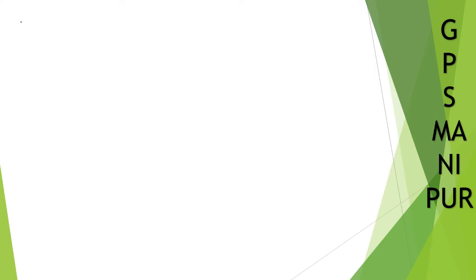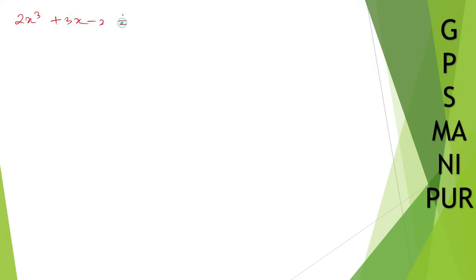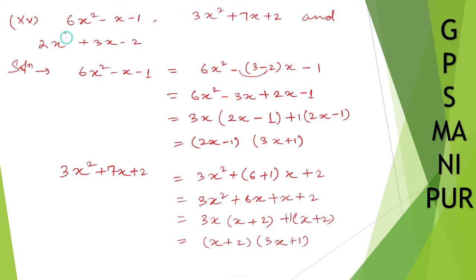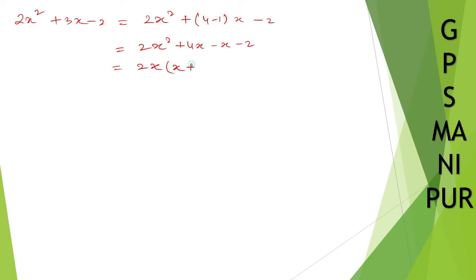For the third one, 2x squared plus 3x minus 2 — note: this is x squared, not x cubed, a writing mistake. Since 2 times 2 is 4, and 4 minus 1 is 3, we write 2x squared plus 4x minus x minus 2. Taking 2x common and then (x plus 2) common gives (x plus 2)(2x minus 1).